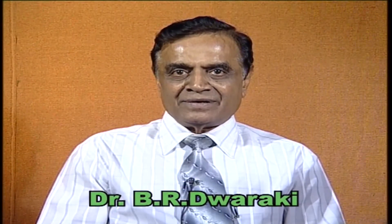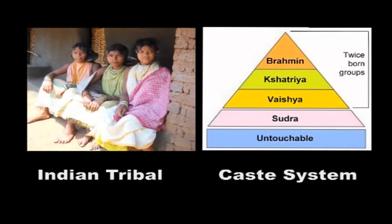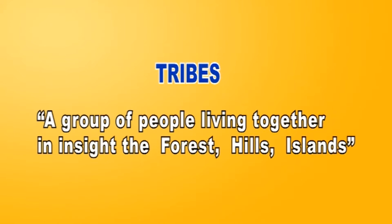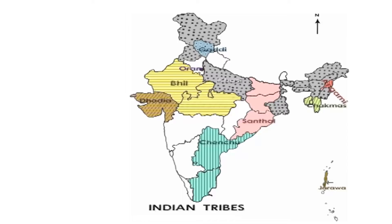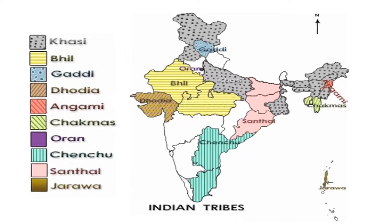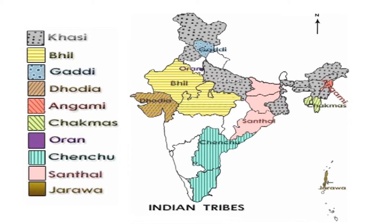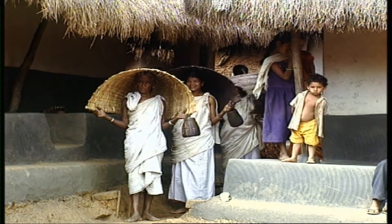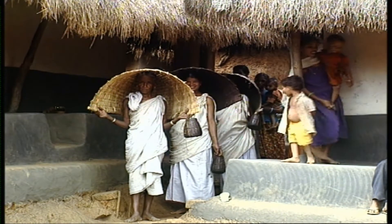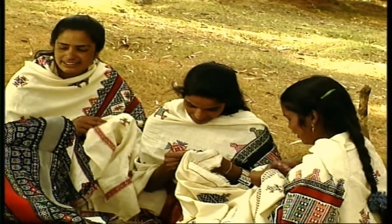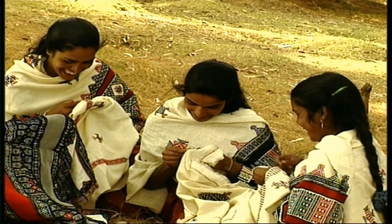In the opening unit of the course in Tribal Sociology, we try to understand the meaning of the word tribe and the characteristics of tribal communities in general, and the distinction between tribe and caste. From this unit onwards, we shall go a little deeper into the understanding of the varieties of tribes existing in our country. In this lesson, I am not going into details in terms of percentages and numbers; we give a general idea about how some well-known tribes are distributed in our country.